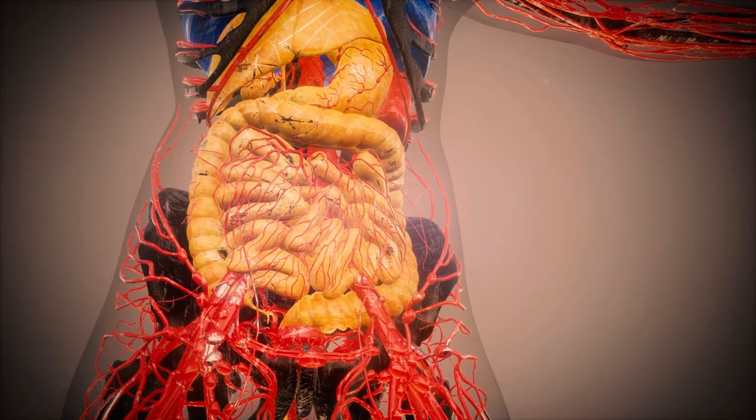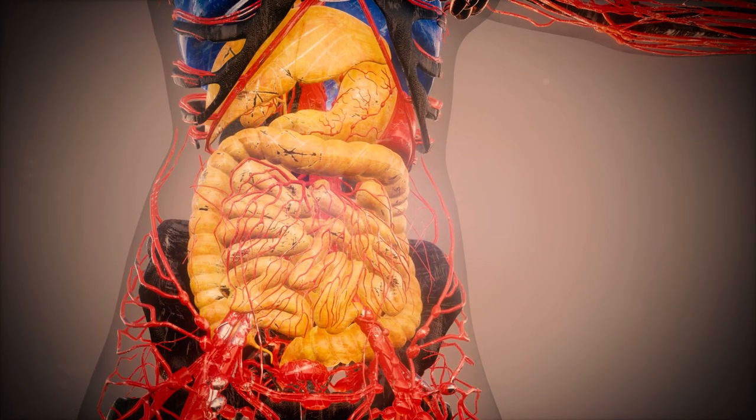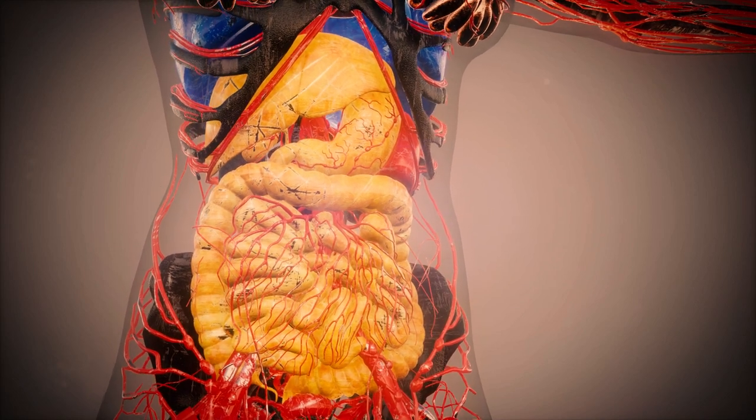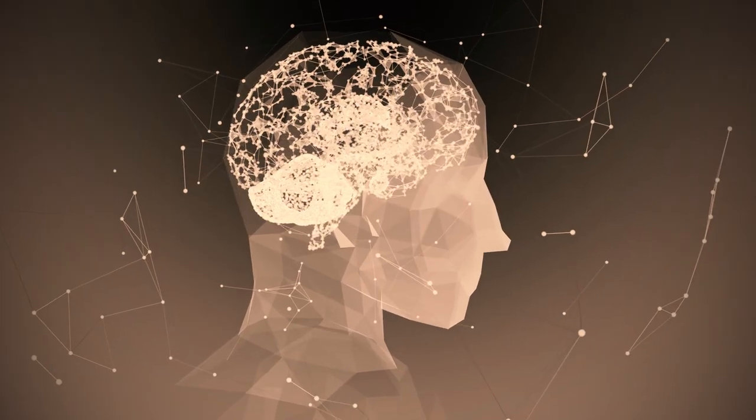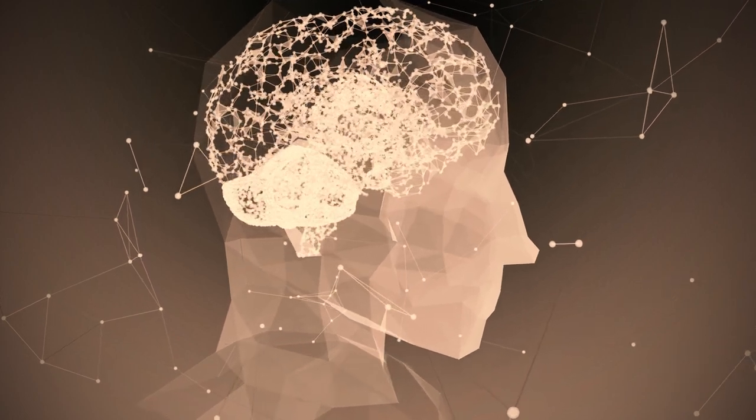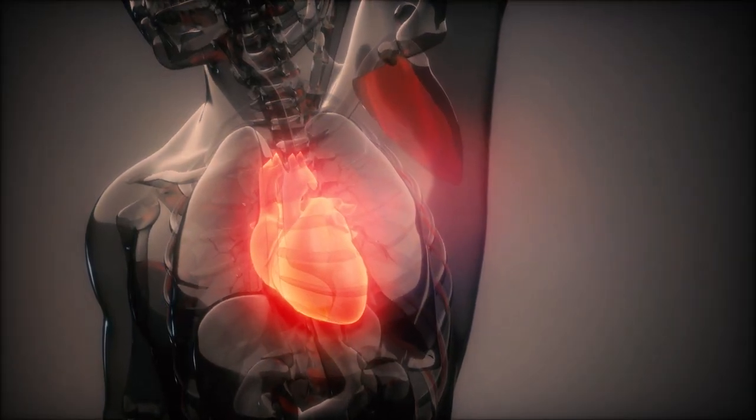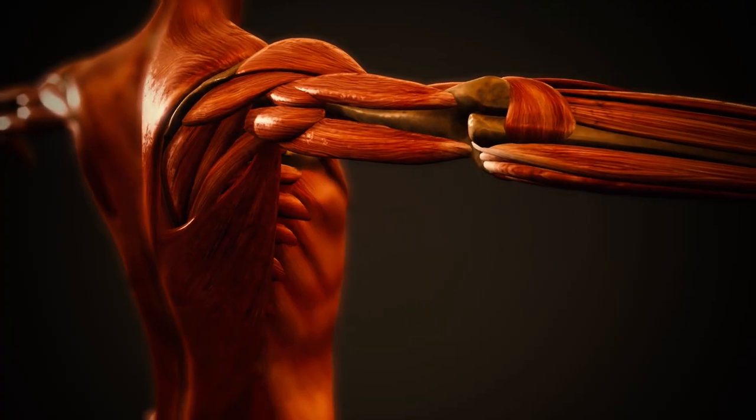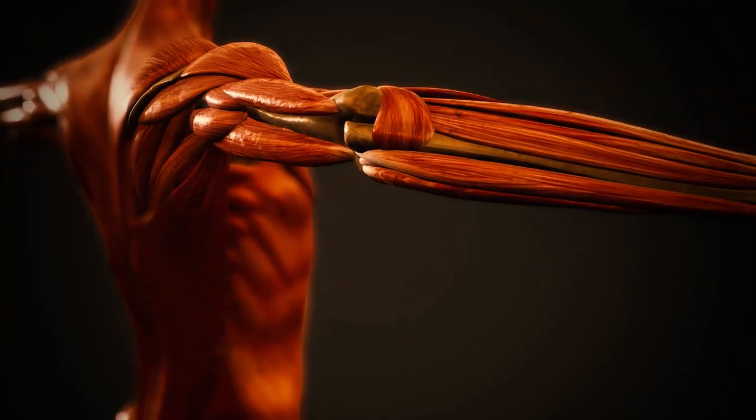Supports organ function. Every organ in the body requires oxygen to function effectively. For example, the brain requires a constant supply of oxygen to carry out its complex tasks. Similarly, the heart needs oxygen to pump blood efficiently and the muscles need oxygen for contraction and movement.